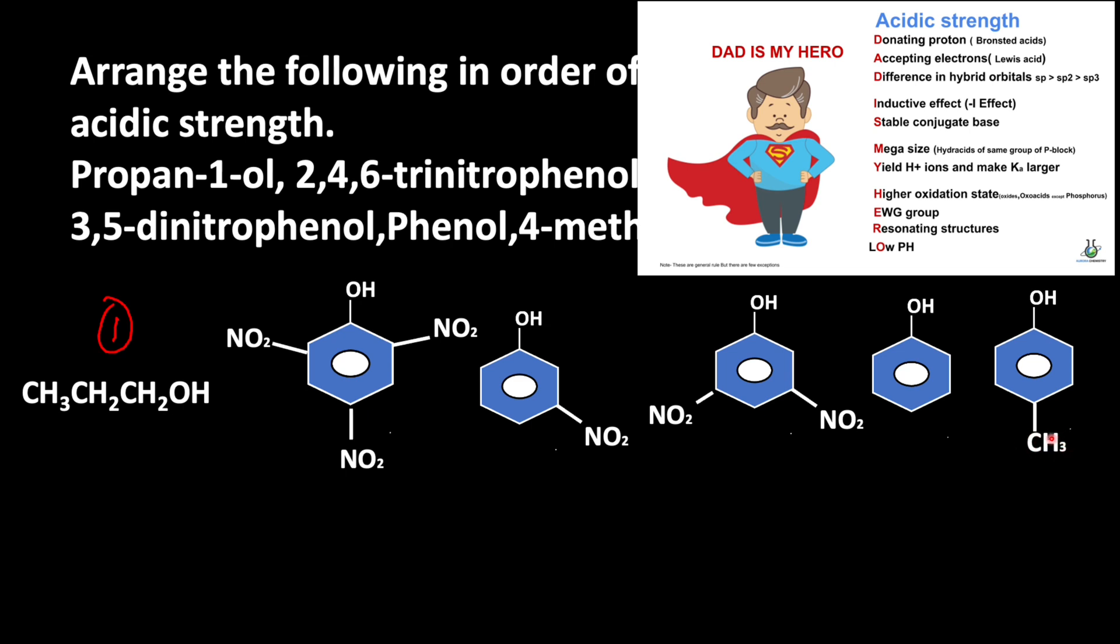This methyl group is an electron releasing group. If you look at the mnemonic EWG group, electron withdrawing group enhances or increases the acidic strength. The nitro group is an electron withdrawing group.